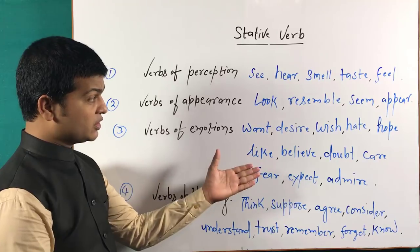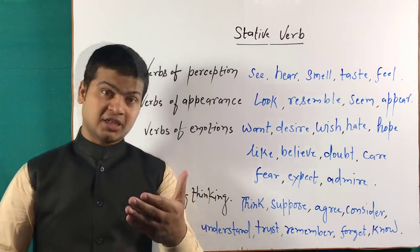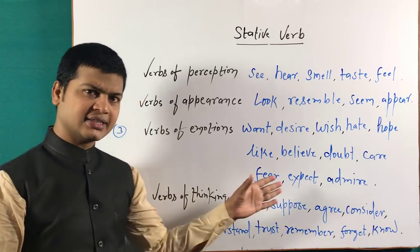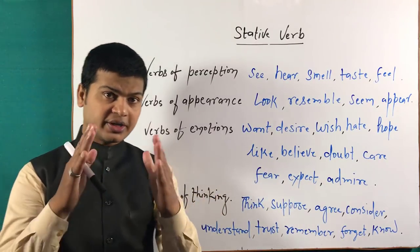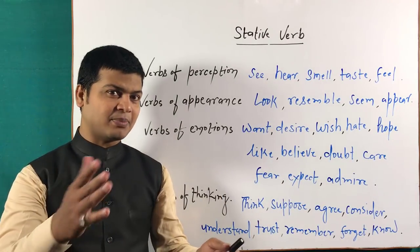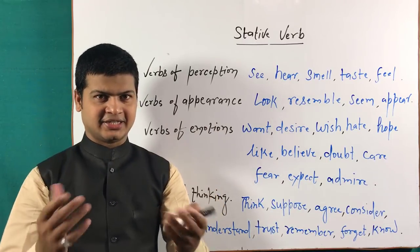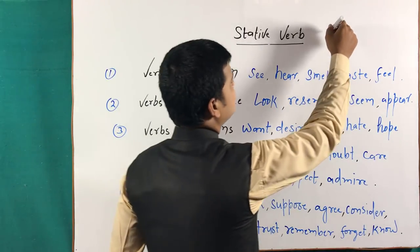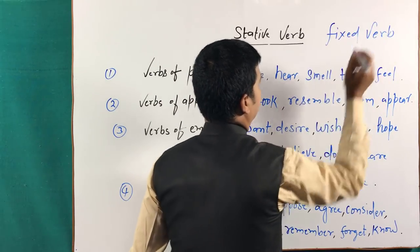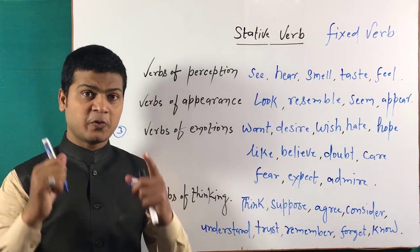Friends, kuch aise words hain, generally jinke saath -ing form nahi use hota. Matlab main aisa nahi keh raha ki kabhi nahi hota, but aam tor par inke saath -ing form use nahi hota. Aur is tarah ke words ko hum stative verb kehte hain. Stative verb ka matlab hota hai 'fixable' — aur verb means actual word. To stative verb ka matlab hota hai fixed verb.